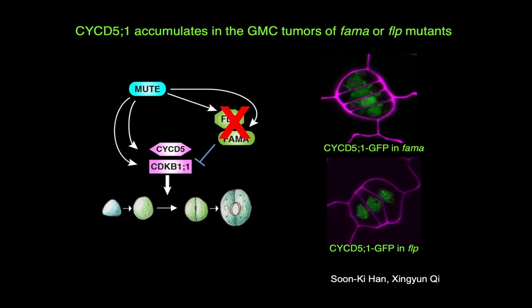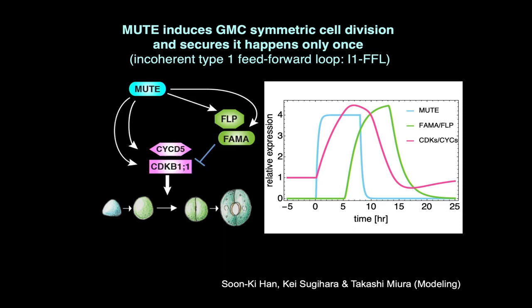We got very interested in this minimalistic gene regulatory circuit: gene A (MUTE) activates gene B (FAMA and FOUR LIPS), which inhibits gene C (cyclins and CDKs), which MUTE also directly up-regulates. This circuit is well known in E. coli gene expression regulation and is called an incoherent type 1 feed-forward loop, or I1-FFL. The beauty of this circuit is that it can generate a single pulse of the output C — in this case, cell cycle regulators — even if the input A is stationary. So it's a strong, single-pulse generator. We made the hypothesis that this incoherent feed-forward loop is required for ensuring the symmetric division happens just once, because that is so critical for stomata function.